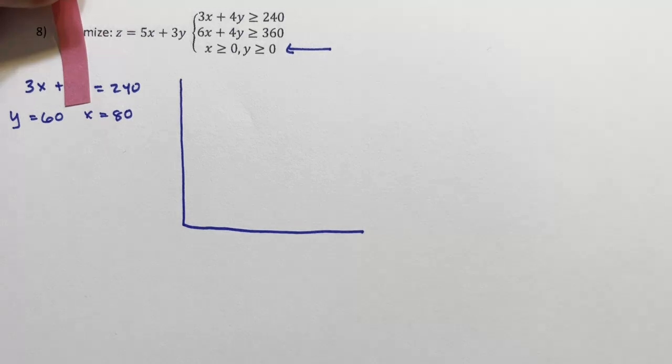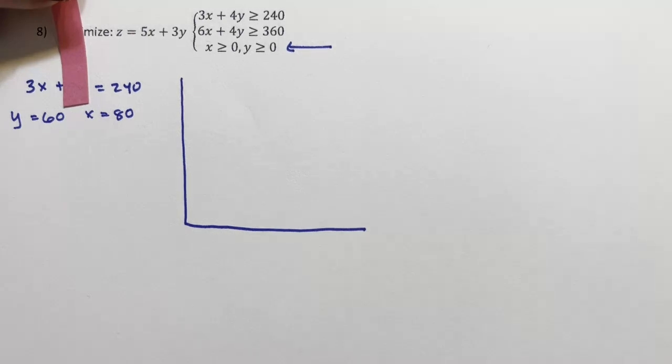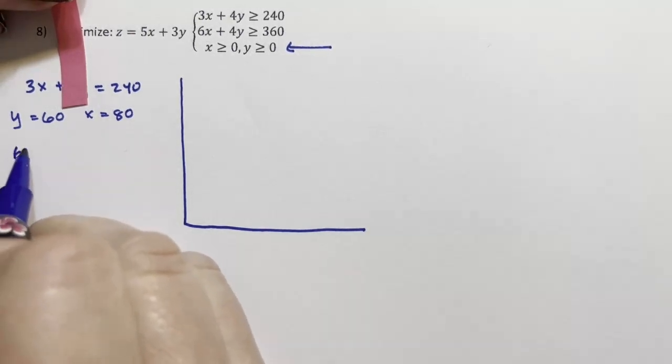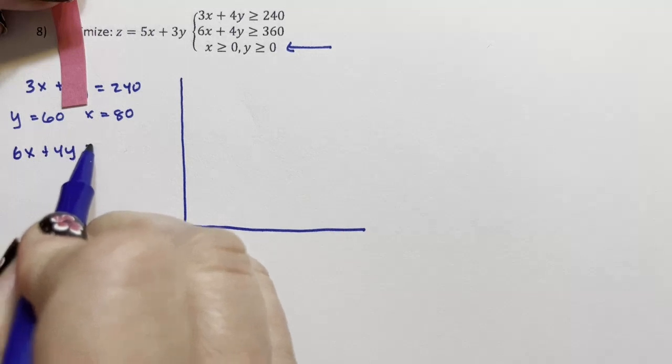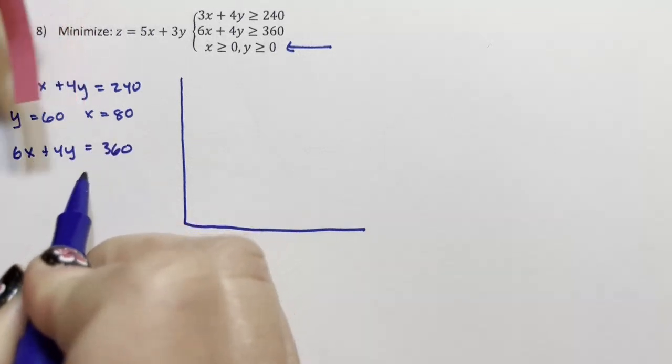We are going to do the exact same thing with the second equation. So we're going to take 6x plus 4y equals 360.